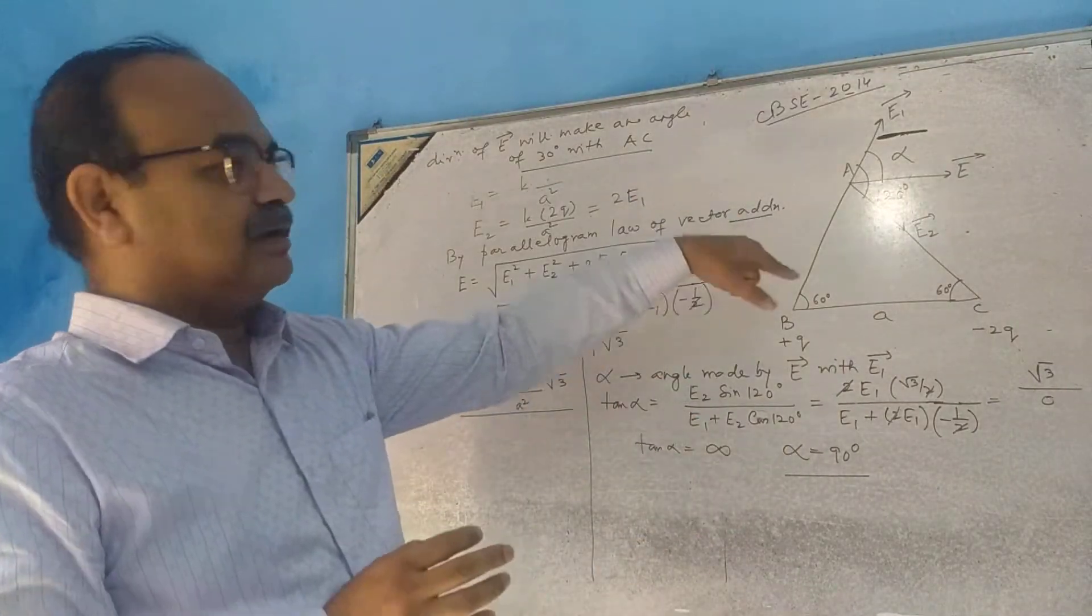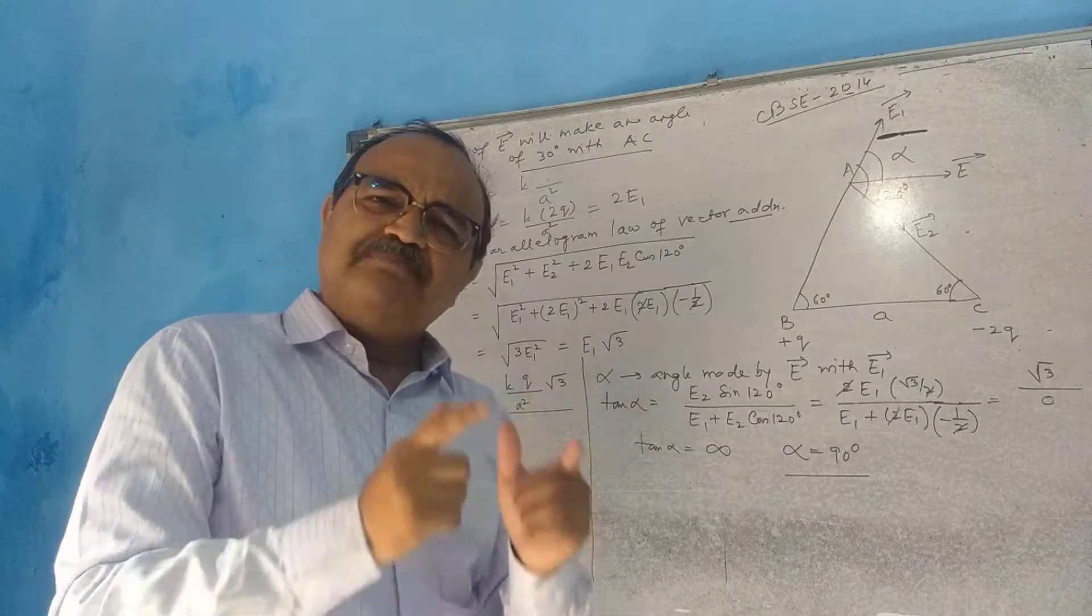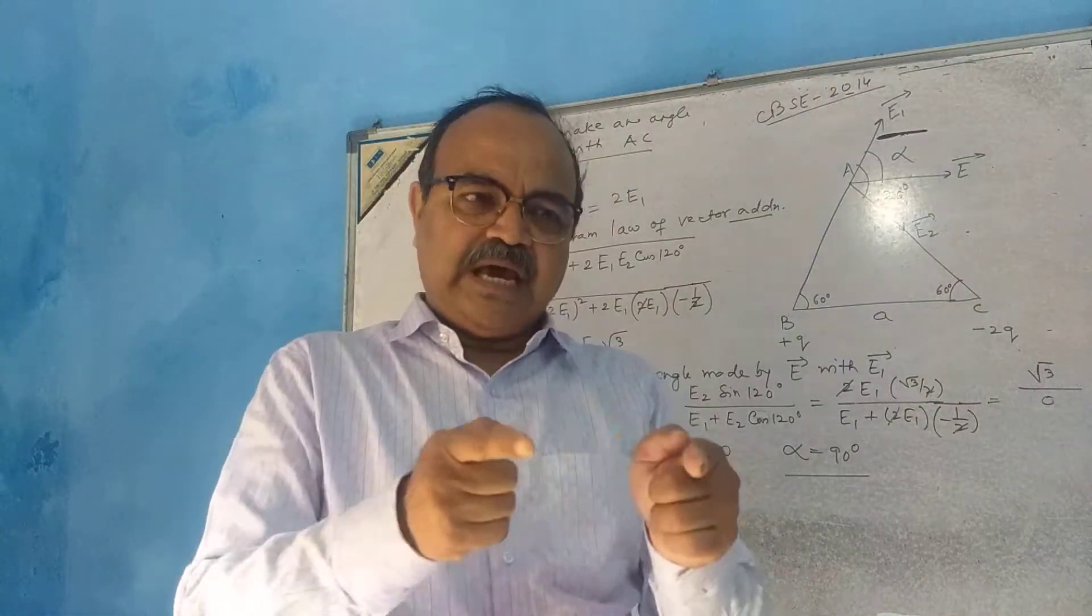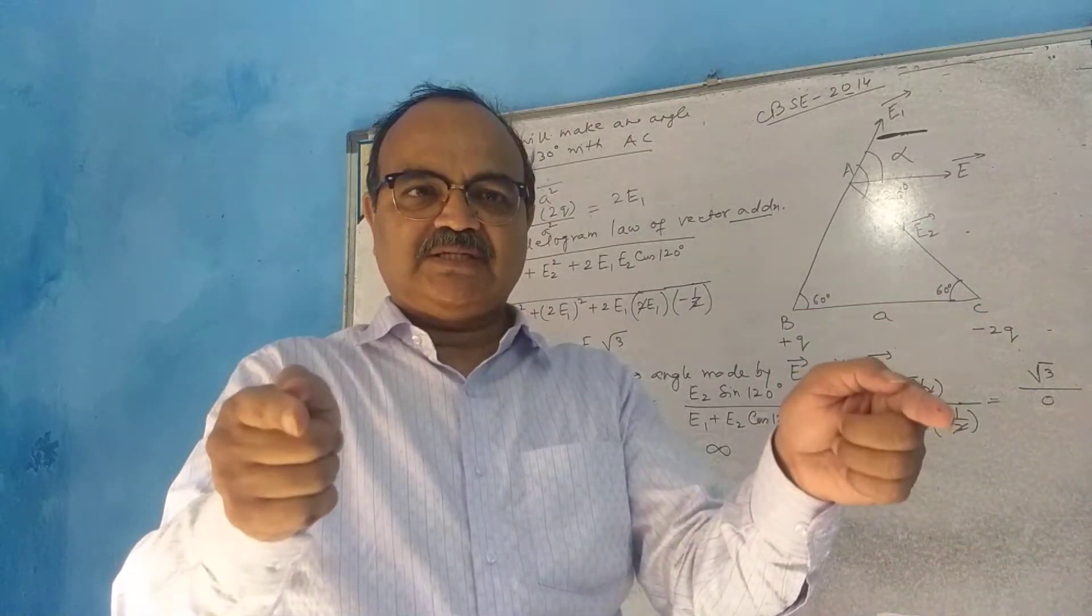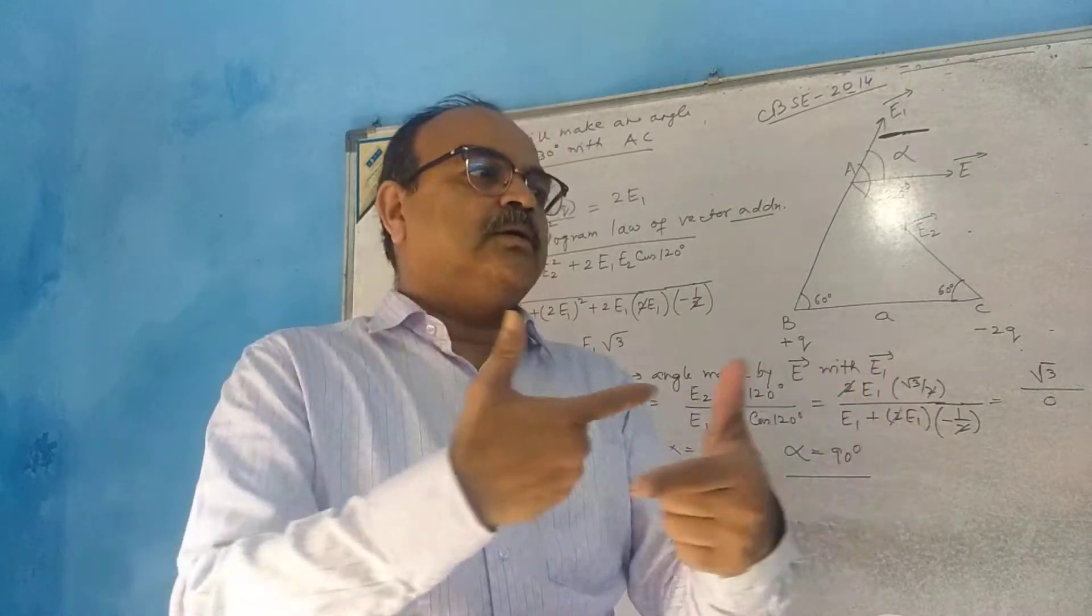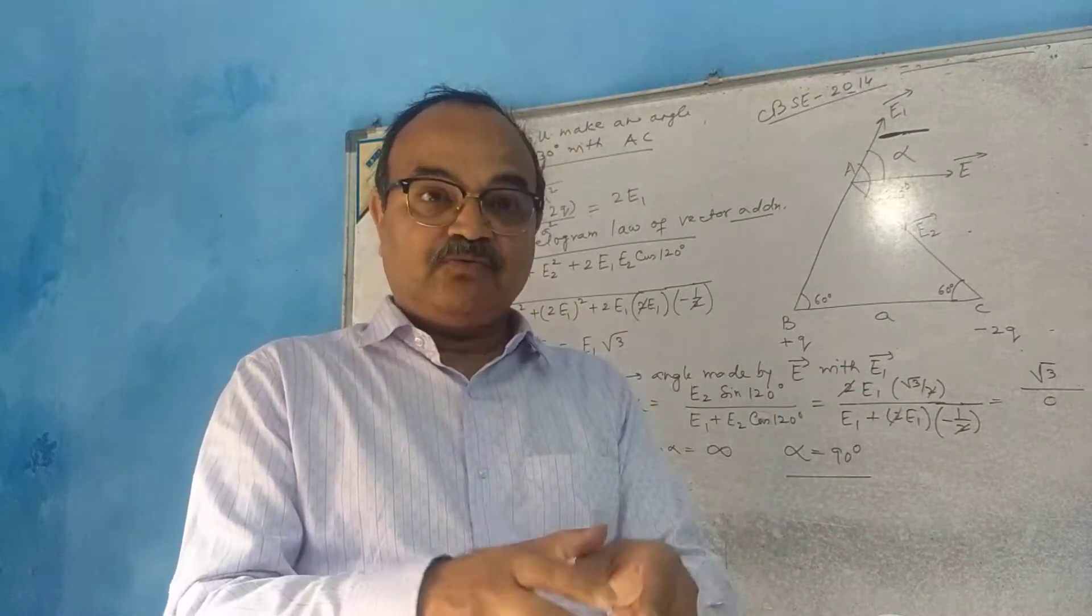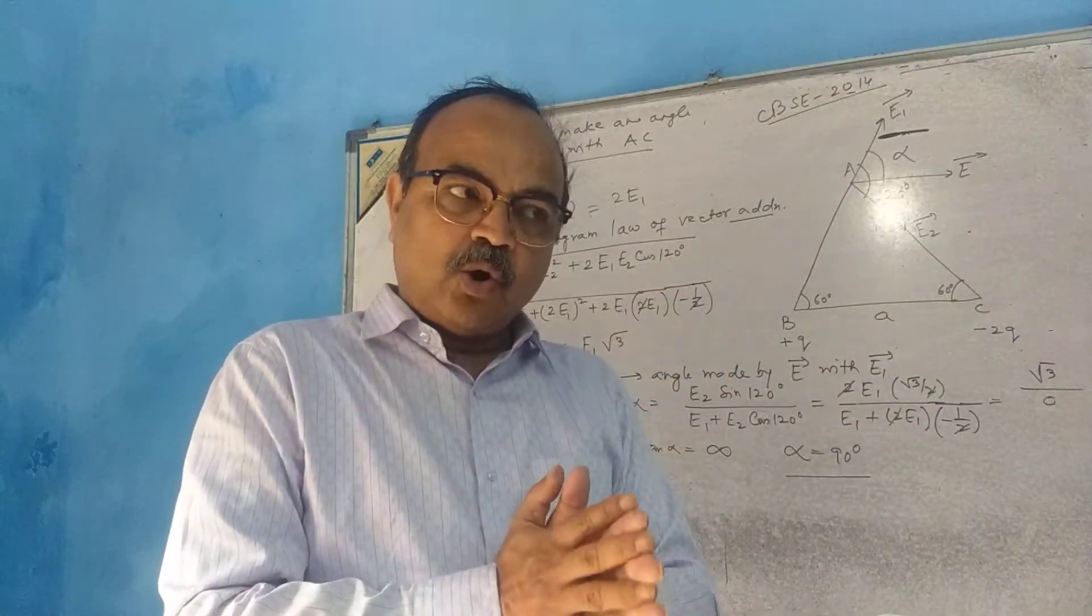If the charges are placed along a particular line, whether like charges or unlike charges, then either the field will be added or subtracted to find out the net field.